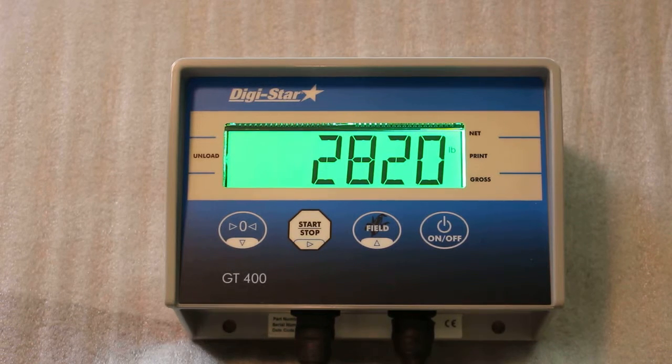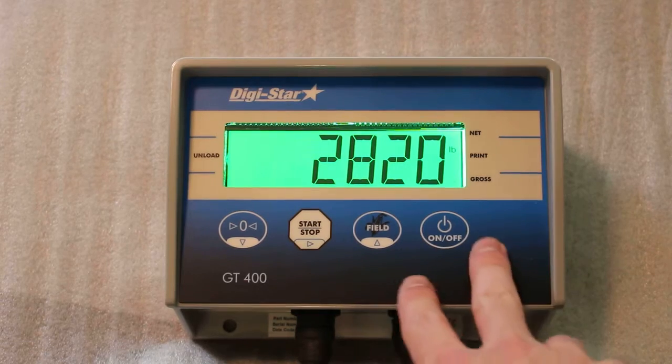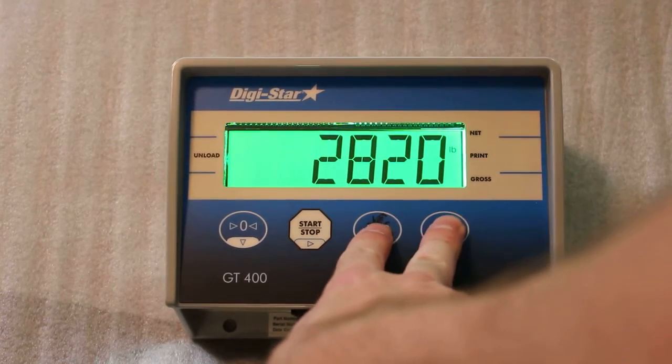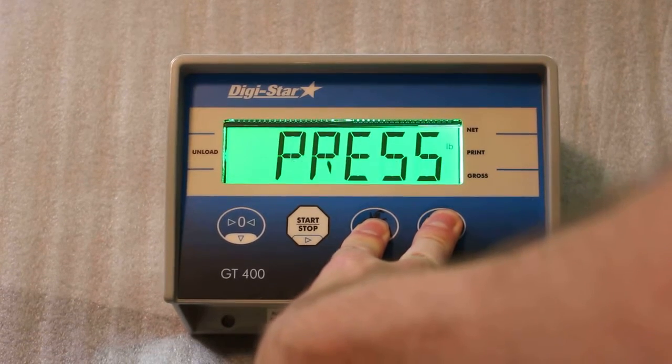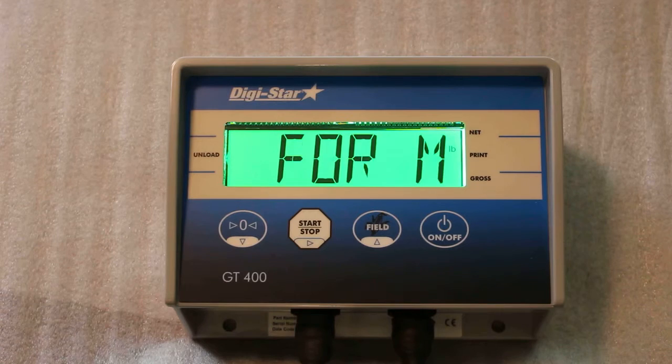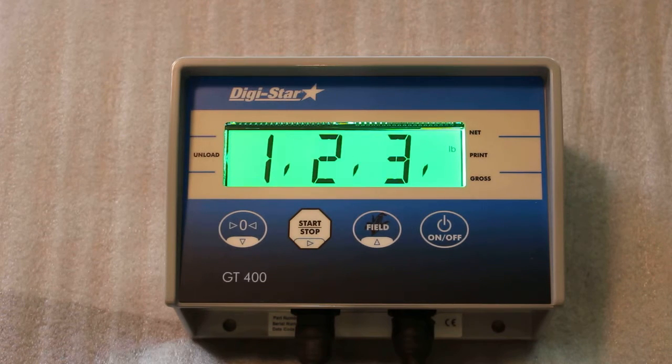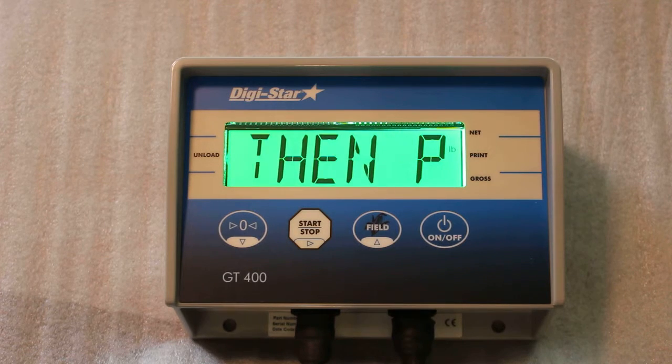Okay, the next feature that is probably noteworthy is the menu feature. You can access that by pushing the field and the on button together to get into it. So you have only three menus on this indicator.